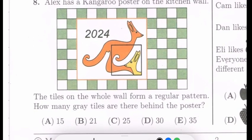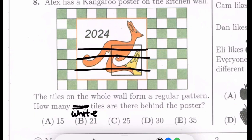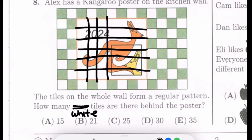We're on number 8. Alex has a kangaroo poster on the kitchen wall. The tiles on the whole wall form a regular pattern. How many gray tiles are there behind the poster? On this PDF it looks white, so we're going to call this white instead. How many white tiles are there behind the poster? With these type of problems, all you have to do is continue the pattern. We can draw these lines out over the kangaroo poster. I know some of you can figure this out without drawing out the lines, but it helps to have a visual representation.